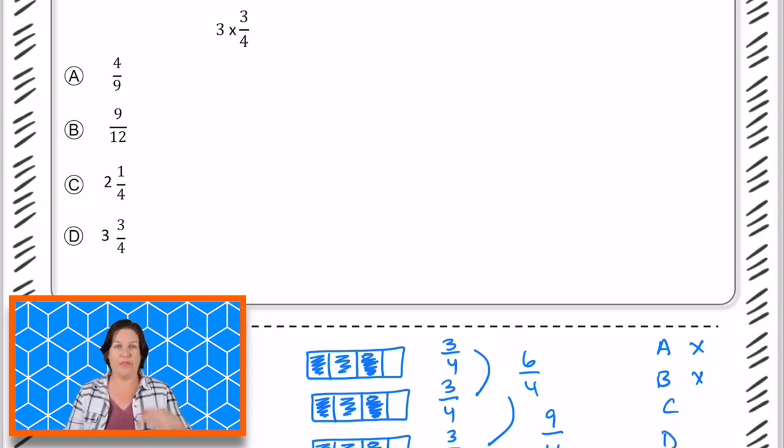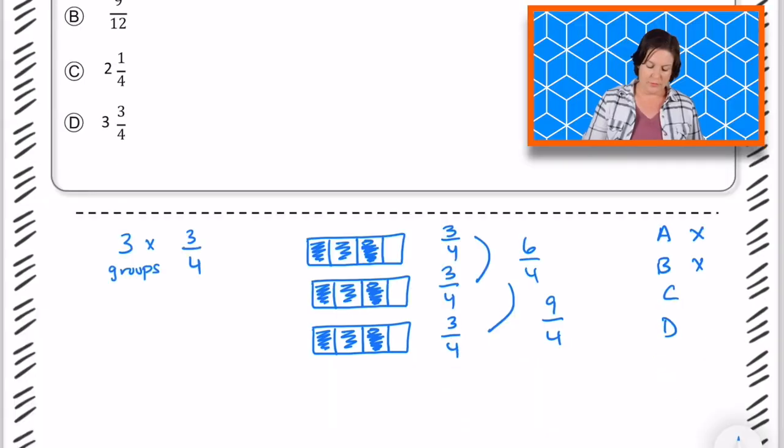We have 2 1/4 and 3 3/4. So the way that we can think about this is 9/4 could be decomposed into 4/4, that would be a whole, 4/4, that would be 8/4, plus another 4th.